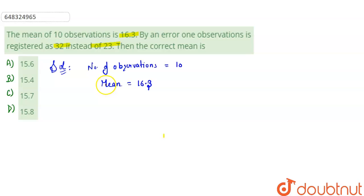instead of 23. So by error, one observation got registered as 32. So for that, what we'll do, as we know 16.3 is the mean, so let us first discuss the formula. The formula for finding the mean